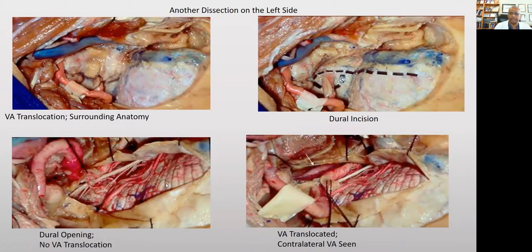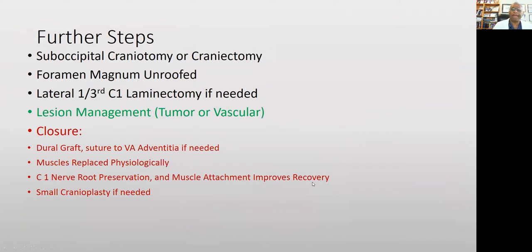Further steps include suboccipital craniotomy, craniectomy, and partial mastoidectomy. When closing, we normally use a dural graft — sometimes suturing to the adventitia of the vertebral artery with fine sutures if needed. The muscles are put back as physiologically as possible. You may need to perform a small cranioplasty if a lot of bone was lost.